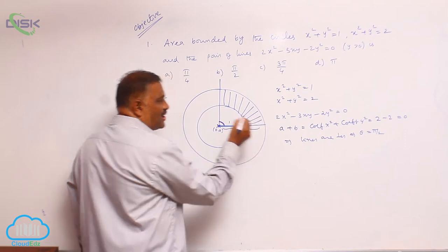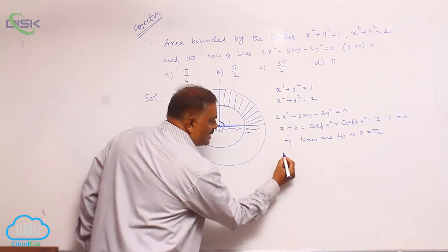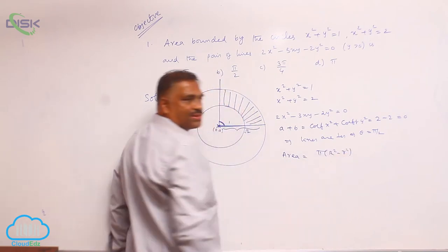I think from mensuration we are familiar with - the width of this point is, area is given by pi into capital R square minus small r square.